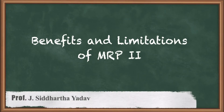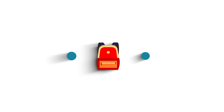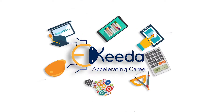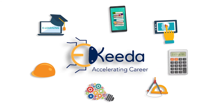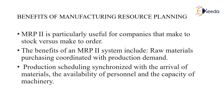Hi all, welcome to this course in PPC. Today we'll be learning about the benefits and limitations of MRP2. Manufacturing business planning is particularly useful for companies that make to stock versus make to order. The benefits of an MRP2 system include raw materials purchasing coordinated with the production demand, and production scheduling synchronized with the arrival of materials.